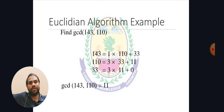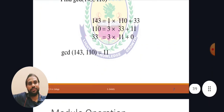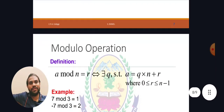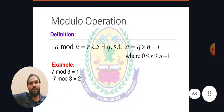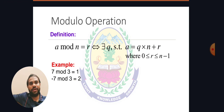The concept of modular operators: a mod n equals r, such that a equals q times n plus r. For example, 7 mod 3 equals 1. Similarly, minus 7 mod 3 equals 2.